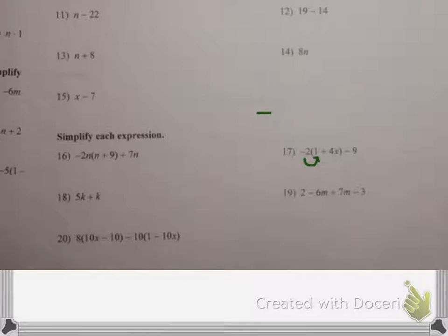Alright, this one is really easy. If you have five k's, and then you have one more k, you have six k's all together. And that's how you do that.